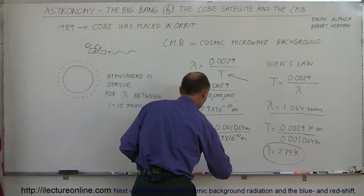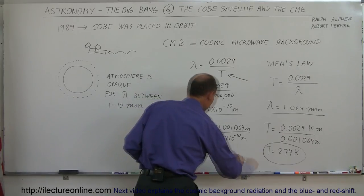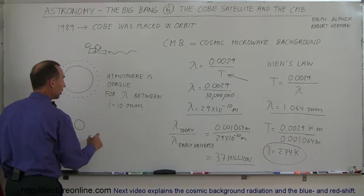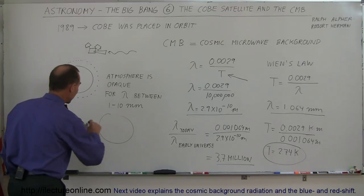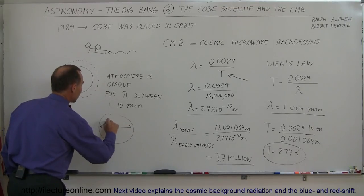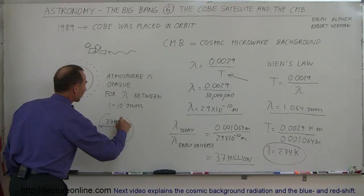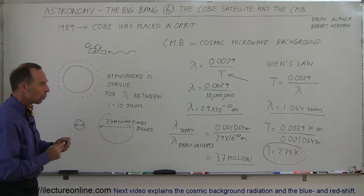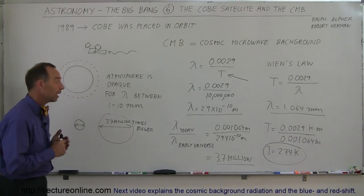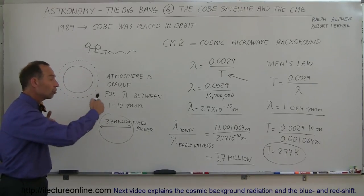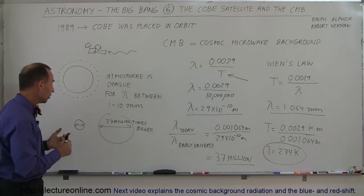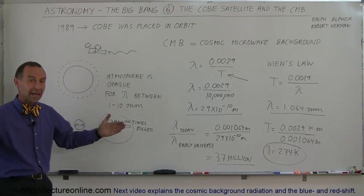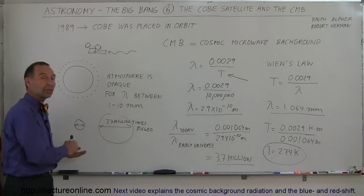So, that ratio is equal to 3.7 million. So, if we say that the universe back then was this big, the universe today would be, in radius or in diameter, 3.7 million times bigger. Wow! That's an amazing discovery. Now, knowing what the radiation length is of the background radiation today, and knowing how radiation stretches along with the stretching of space, we can see that the size of the universe has grown by 3.7 million times just in the diameter. For volume-wise, you'd have to cube that number.